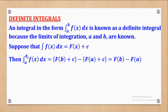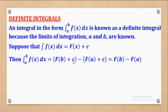You start with the upper limit b — where there is x, substitute b — to get F(b) plus c, minus the lower limit a — where there is x, put a — to get F(a) plus c. If you simplify, you realize that the constant of integration cancels to give you F(b) minus F(a). This means that whenever you are integrating and the limits are given, the constant of integration can be ignored.